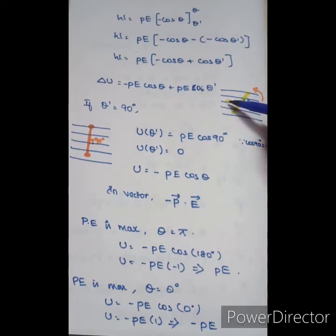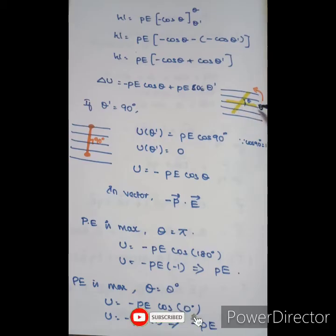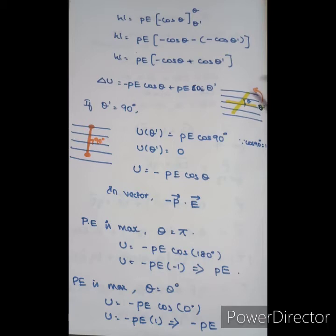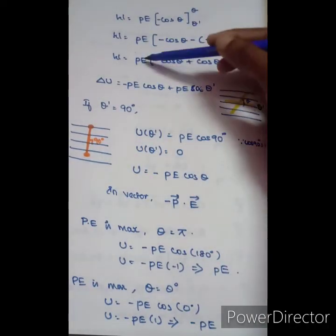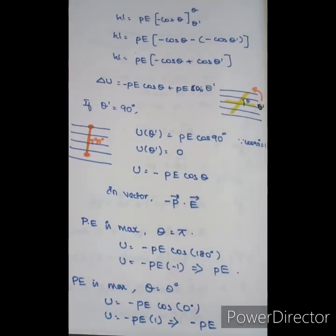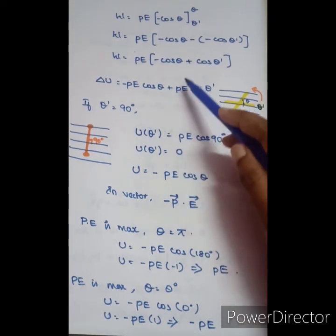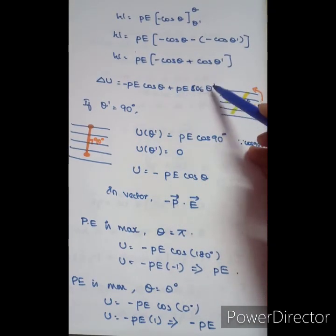If the dipole is parallel to the electric field line initially, with the initial angle theta-dash being parallel, then by applying an external torque it is brought to angle theta. The initial potential energy corresponds to theta-dash and the final corresponds to theta. So the change in potential energy delta-U equals minus PE cos theta plus PE cos theta-dash.